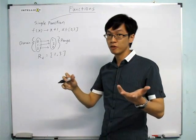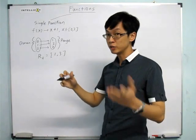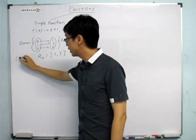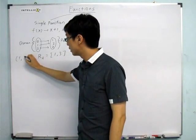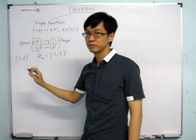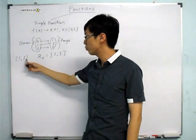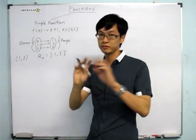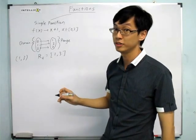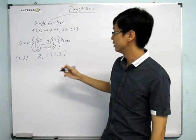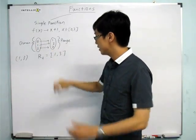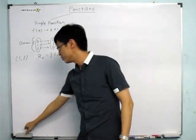A square bracket stands for inclusive. If I have a round bracket, then it's exclusive — that means it takes values between 1 and 3, but does not include 1 and 3. So this is the domain and this is the range.